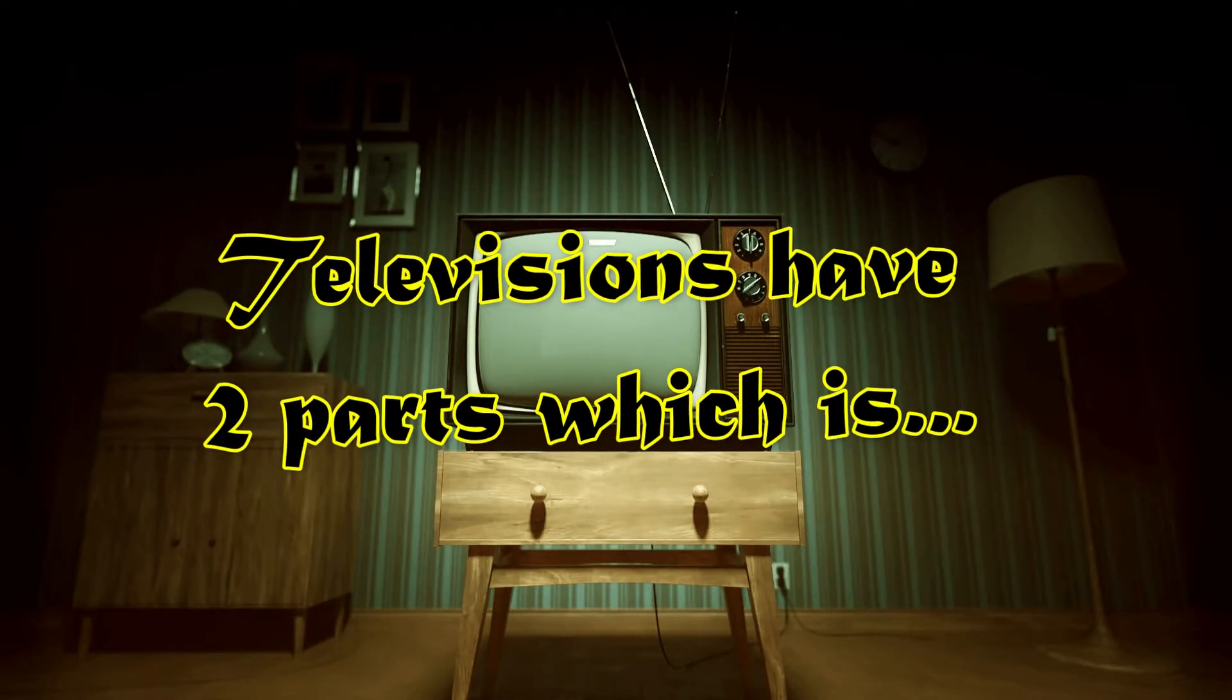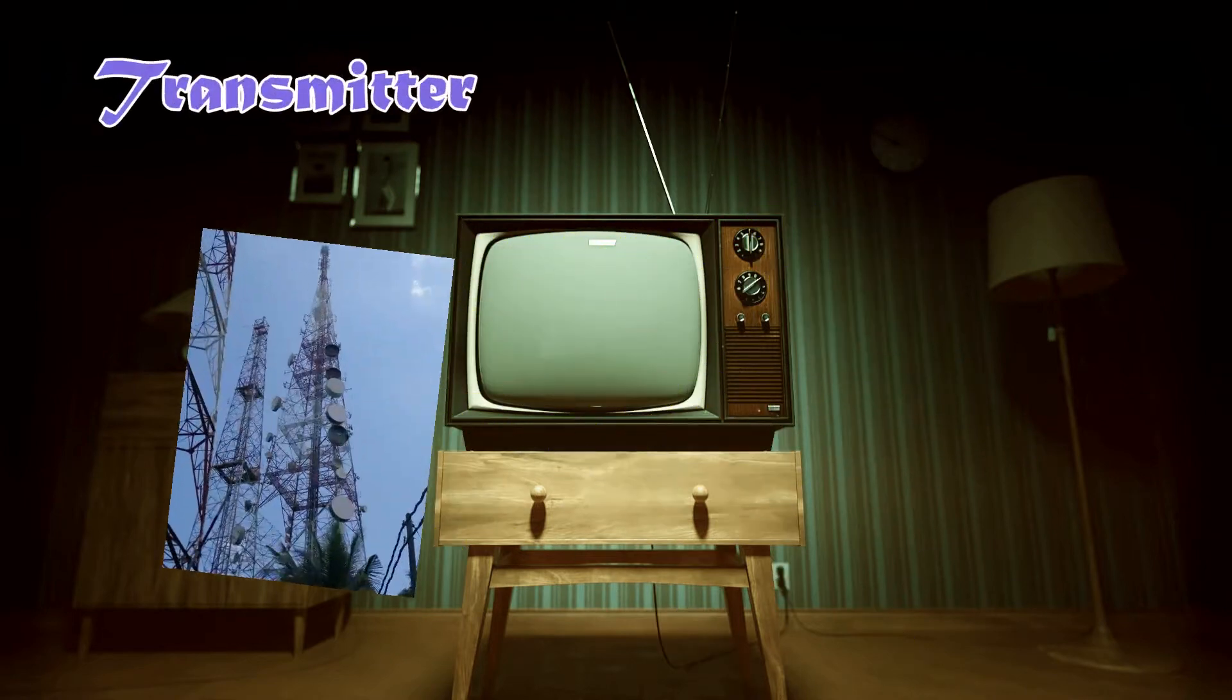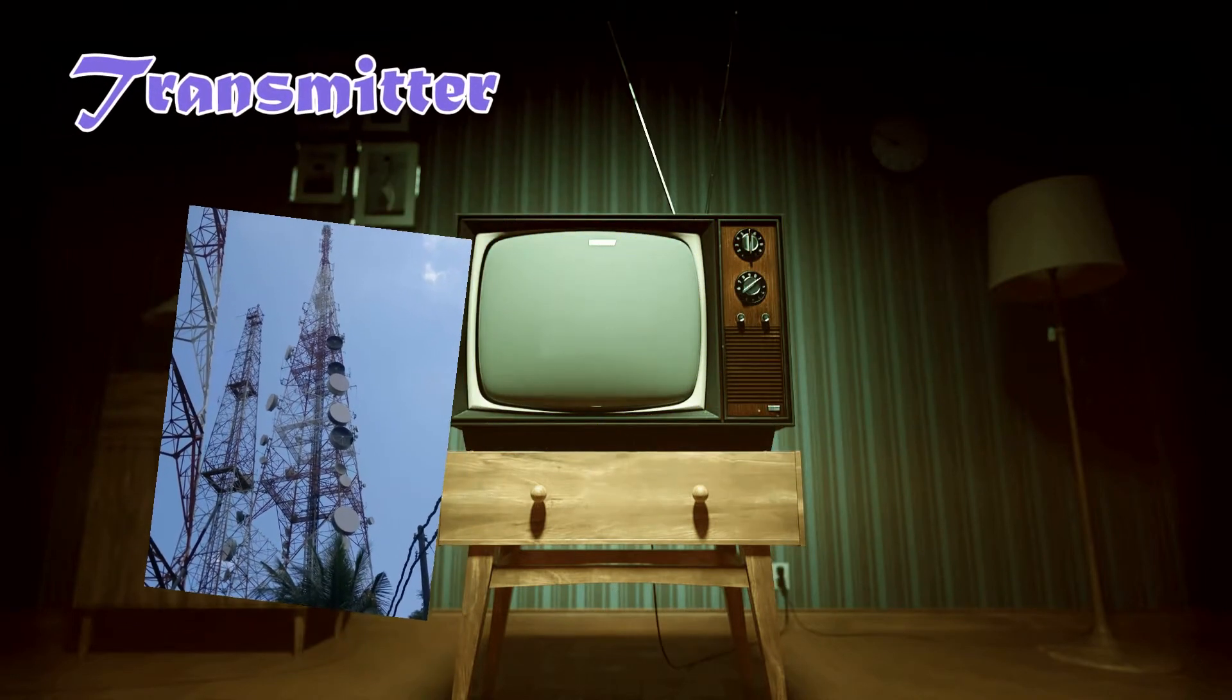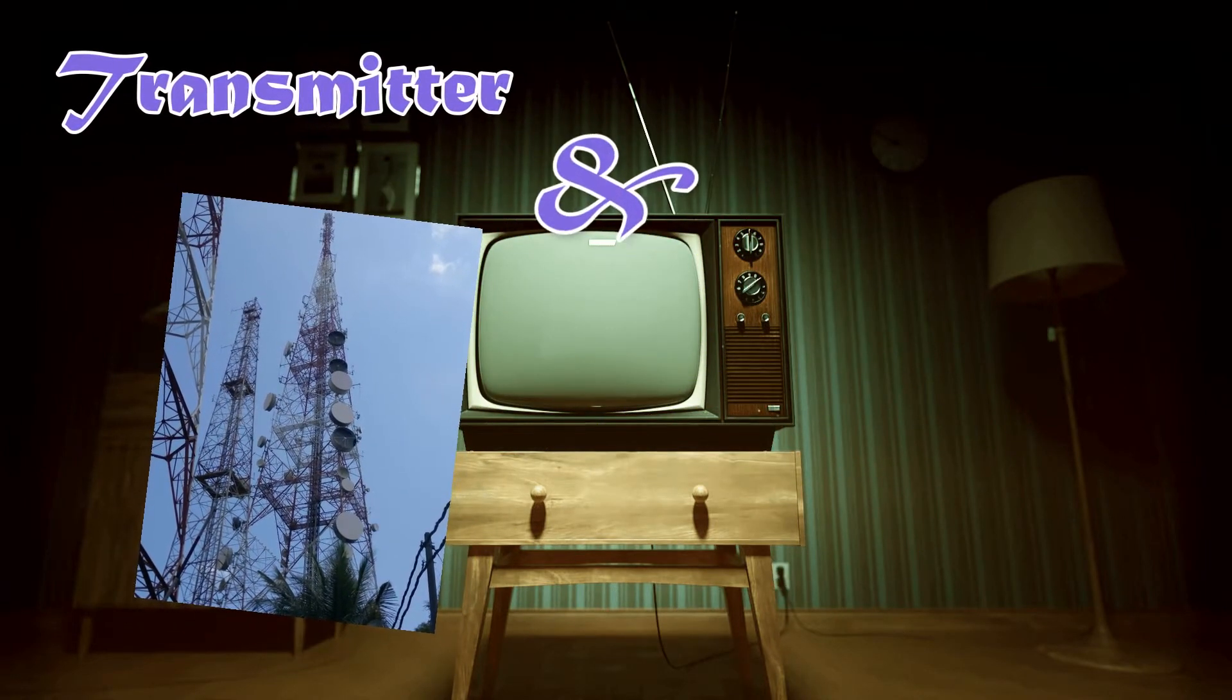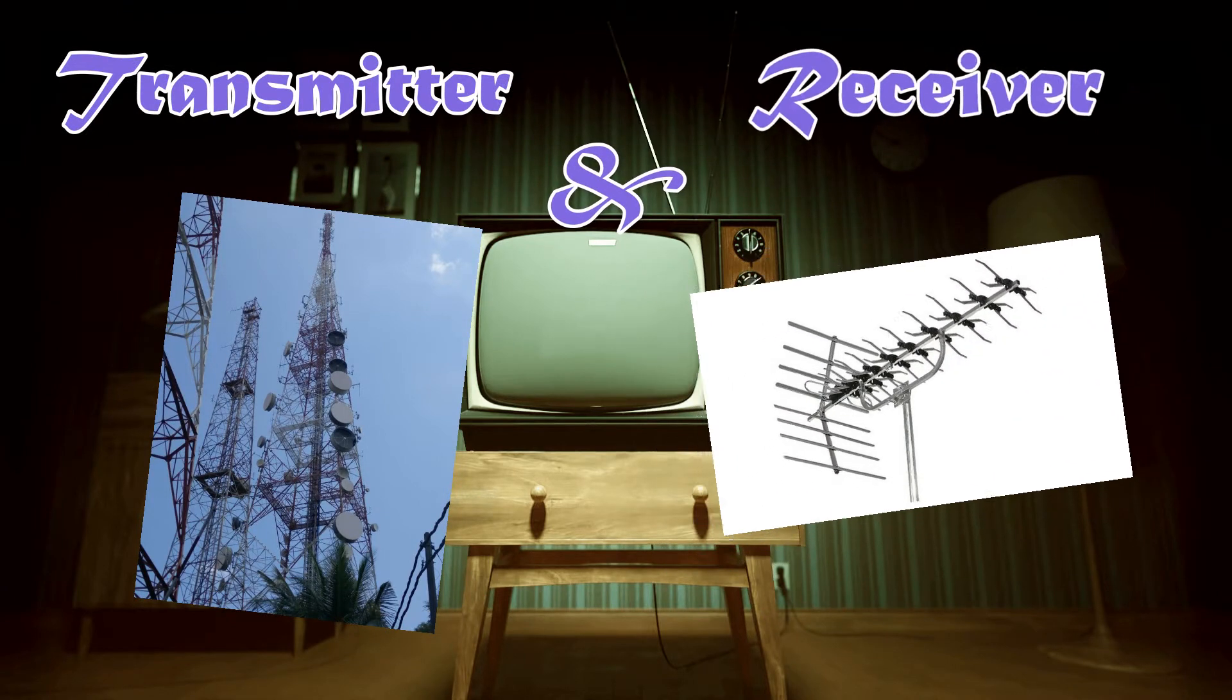Televisions have two parts: the transmitter and the receiver.